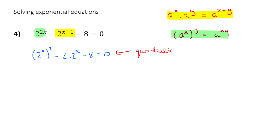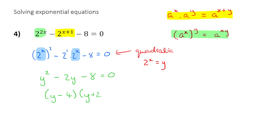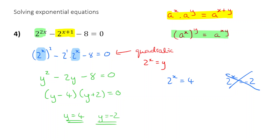It is a quadratic where 2 to the power of x is equal to y. If I take each of those 2 to the x terms and replace them with y, I get y squared minus 2y minus 8 equals zero. And we know how to solve that — it factorizes to (y minus 4)(y plus 2) equals zero, giving two solutions: y equals 4 and y equals negative 2. Using the substitution 2 to the x equals y, it's either 2 to the x equals 4 or 2 to the x equals negative 2. Well, 2 to the x equals negative 2 has no solutions, so we can cross that out. And 2 to the x equals 4 — obviously x must be equal to 2.